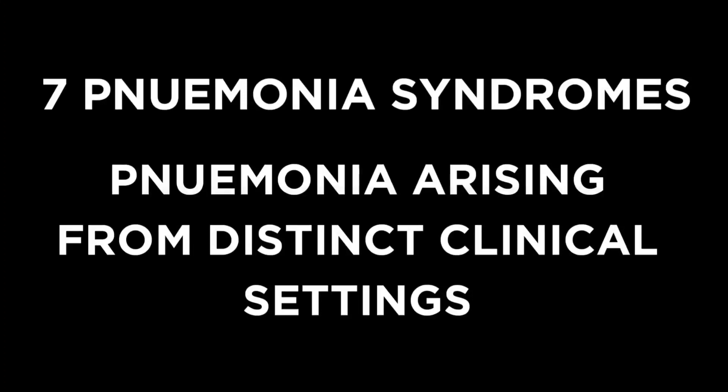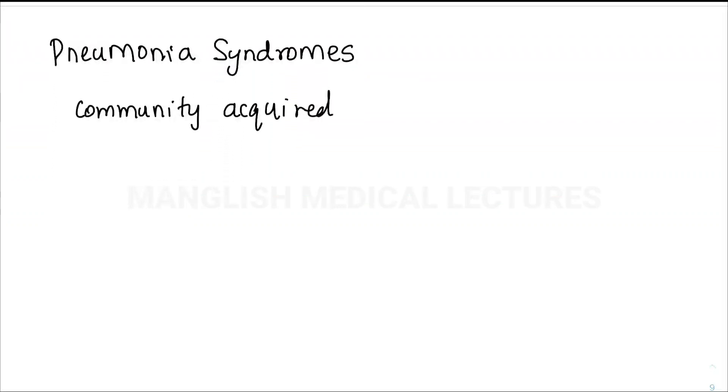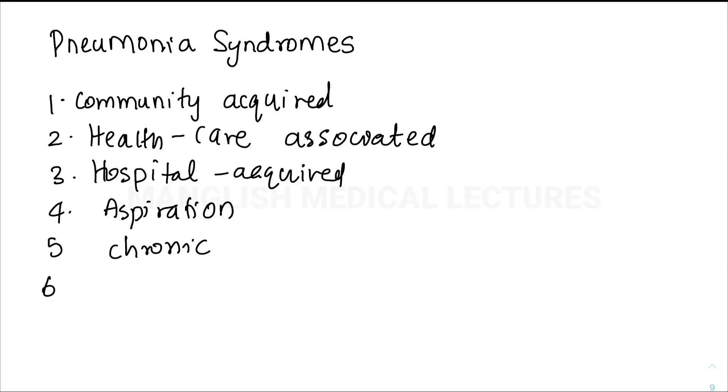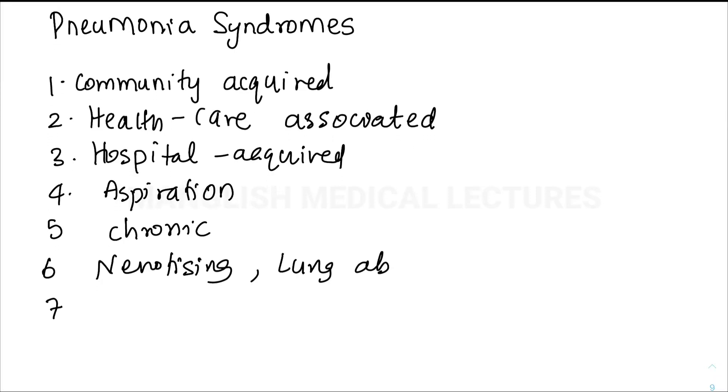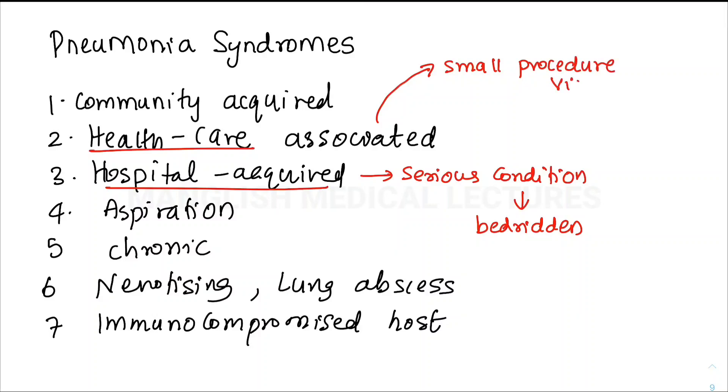Now we move to seven pneumonia syndromes arising from distinct clinical settings. Number one is community-acquired pneumonia—you're going to a marriage or shopping mall and get pneumonia. Number two is healthcare-associated pneumonia. Number three is hospital-acquired pneumonia. The difference: if you're a bedridden patient staying weeks or months in the hospital and get pneumonia, that's hospital-acquired. But if you're in the hospital for a small procedure like wound dressing and get pneumonia two to three days after, that's healthcare-associated pneumonia. Other syndromes include aspiration pneumonia, chronic pneumonia, necrotizing or lung abscess, and pneumonia in an immunocompromised host.